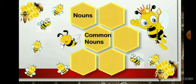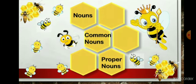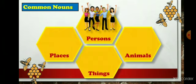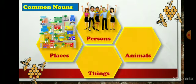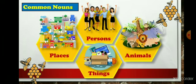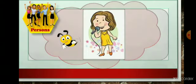Let's understand common nouns and proper nouns. What are common nouns? The common names given to all kinds of persons, places, animals and things — they are called common nouns. Let's see some examples.